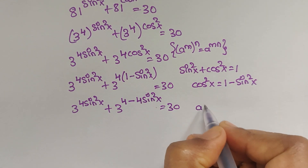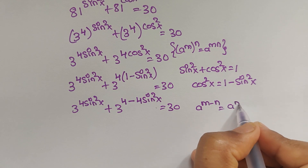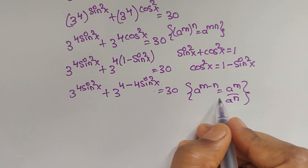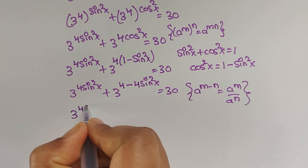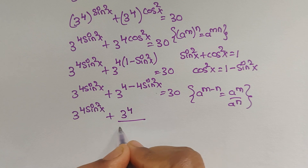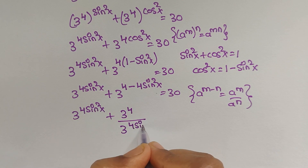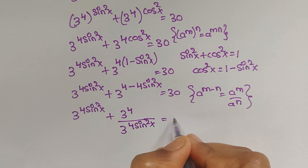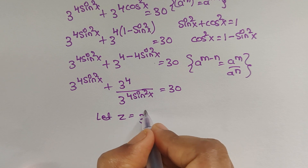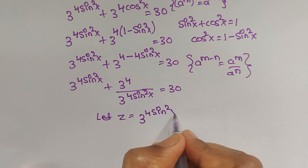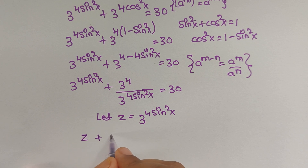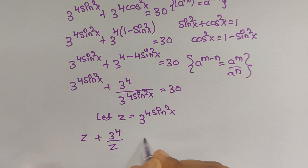We apply the formula a to the power of (m minus n) equals a to the power of m divided by a to the power of n. So we can write 3 to the power of 4sin²x plus 3 to the power of 4 divided by 3 to the power of 4sin²x equals 30. Now let us consider z equals 3 to the power of 4sin²x, so it becomes z plus 81 divided by z equals 30.